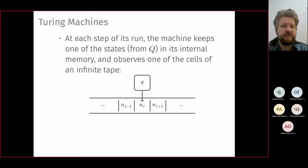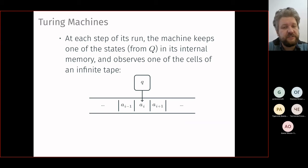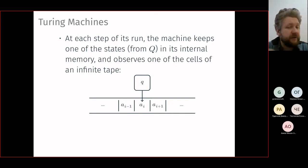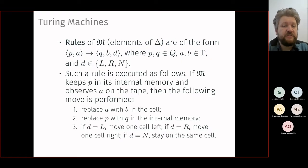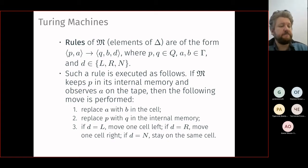In a Turing machine, we have an infinite tape as memory. The machine observes one cell of the tape and can read it, using its internal memory from a finite set Q; it can replace the symbol in the current cell and move one step left or right. The transition rules specify: given current state q and current symbol a, shift to state q', write symbol b, and move left, right, or stay.